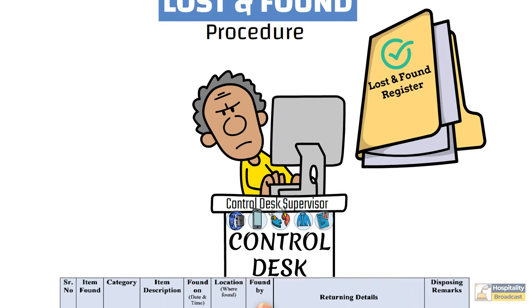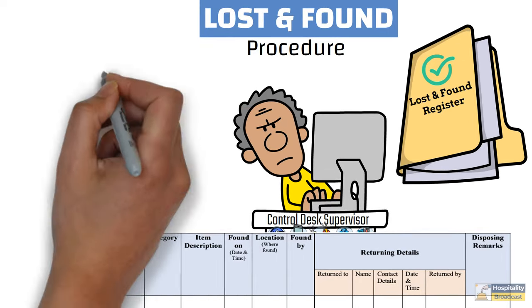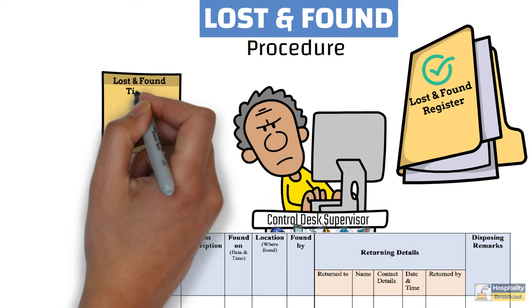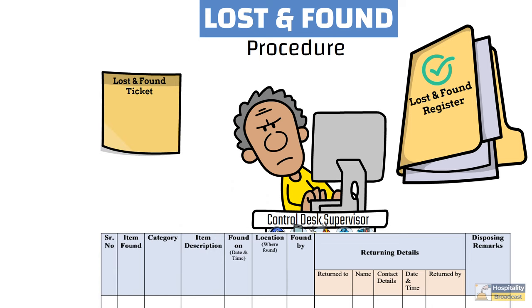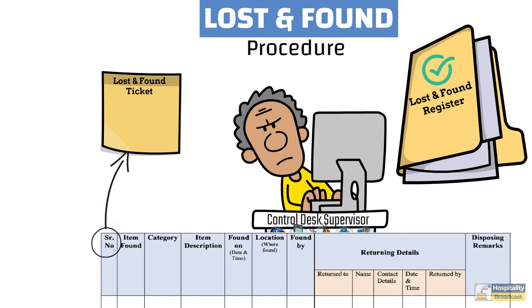Here is one of the typical format of lost and found report. After recording the details, control desk supervisor prepares lost and found slip or tickets. In this slip, basic information such as item description, where it is found, are noted. But do not forget to write the same serial number written in lost and found register. It helps to track the item later.